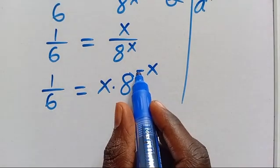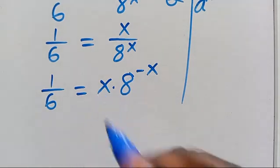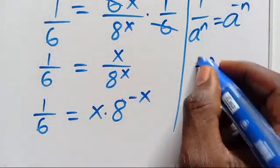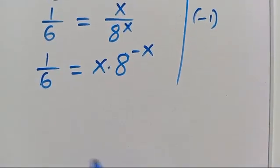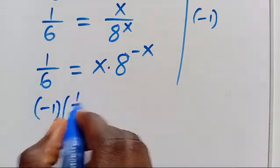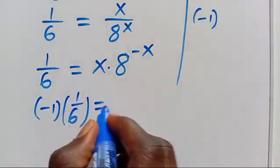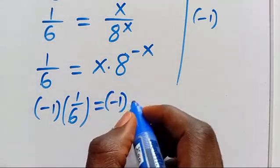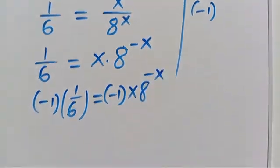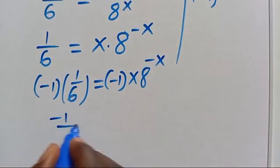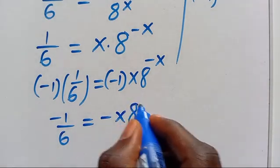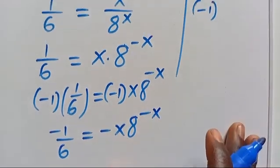Then let's make sure that the negative is on both sides, meaning we can multiply both sides by minus 1. So when we multiply by minus 1, here we have minus 1 divided by 6 equals minus x multiplied by 8 to the power of minus x.